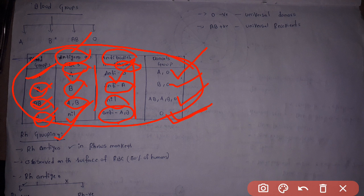RH is a type of antigen. This is actually present in rhesus monkeys. If this antigen is present, it is called RH positive.